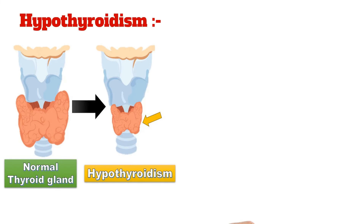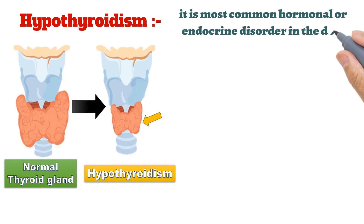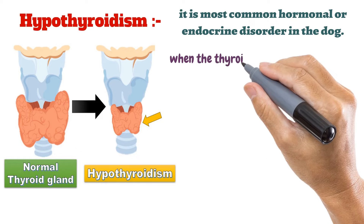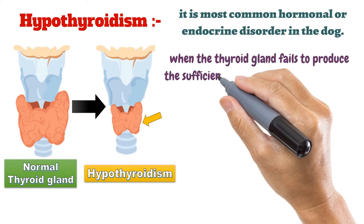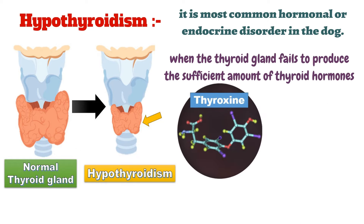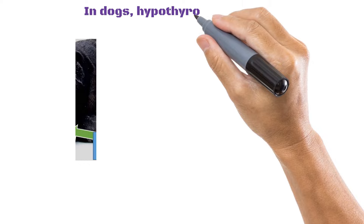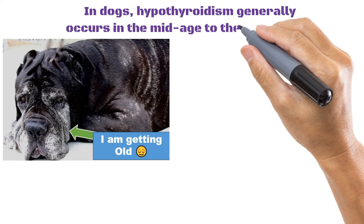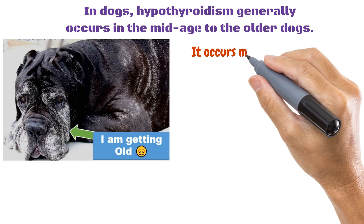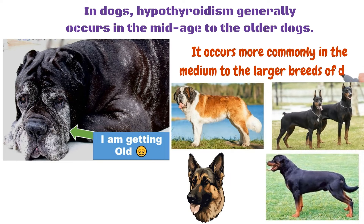Hypothyroidism is the most common hormonal or endocrine disorder in the dog. It occurs when the thyroid gland fails to produce a sufficient amount of thyroid hormones — thyroxine, also known as T4, and triiodothyronine, also known as T3. In dogs, hypothyroidism generally occurs in middle-aged to older dogs and is more common in medium to larger breeds.